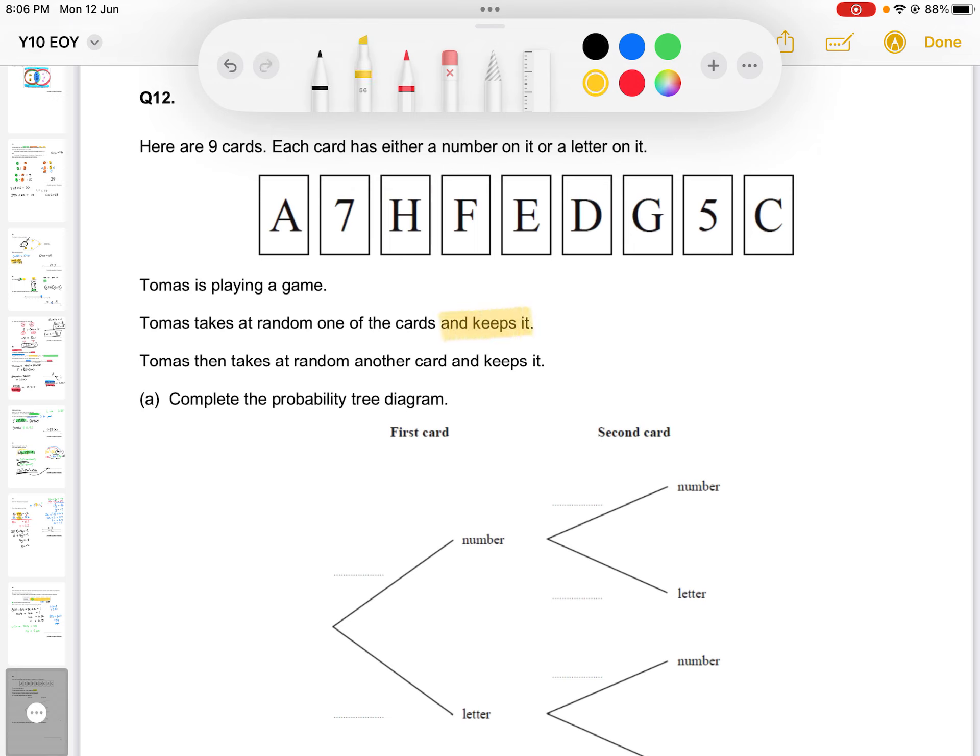That's important because any future probabilities there will be one less card available. Thomas then takes another random card and again keeps it. Complete the following probability tree diagram.